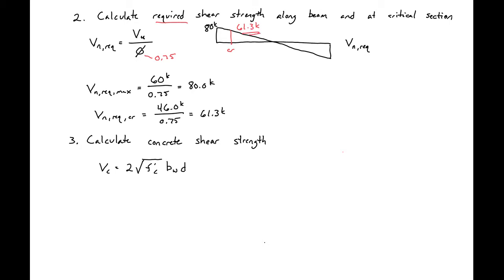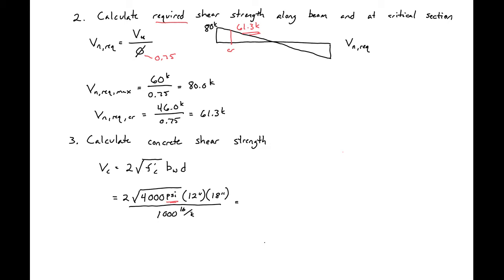The next step is to calculate our concrete shear strength. We're using the ACI simplified expression, so VC = 2√(f'c) × bw × d. With f'c = 4000 psi, bw = 12 inches, and d = 18 inches, dividing by 1000 pounds per kip to convert units, we get VC = 27.3 kips.